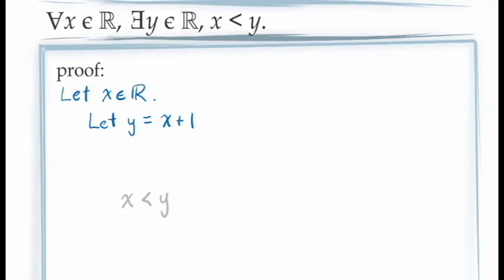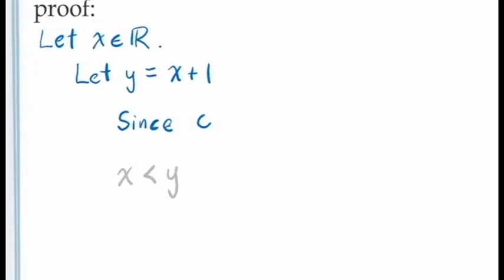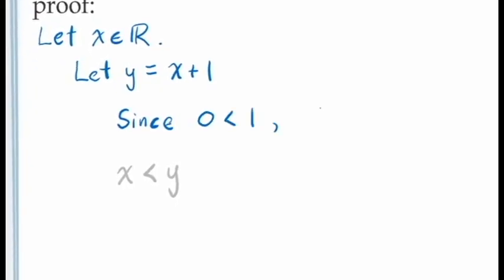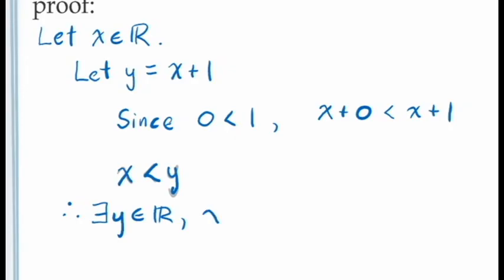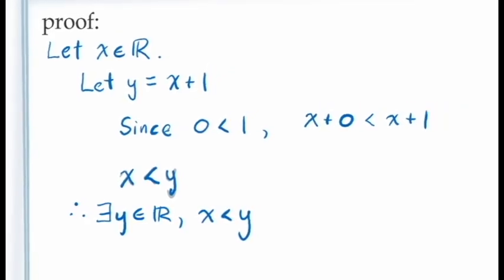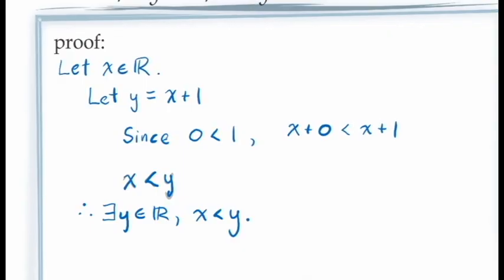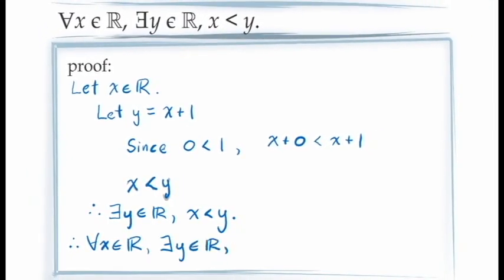The demonstration is fairly simple. We can start with the inequality 0 < 1, and then by adding x to both sides, we get x + 0 < x + 1. Since x + 0 = x and x + 1 is the value we've assigned to y, we have x < y. Since y was a specific value, the principle of existential generalization allows us to conclude there is at least one value of y for which x < y. And since x was arbitrary, the principle of universal generalization allows us to conclude this is true for all values of x.